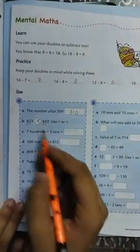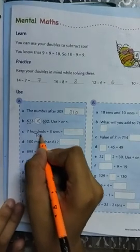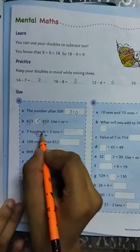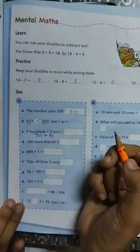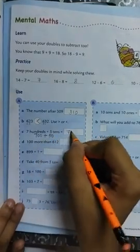Next question, 7 hundreds plus 5 tens. 7 hundreds is 700, 5 tens is 50. Now we have to add, 700 plus 50 is 750.